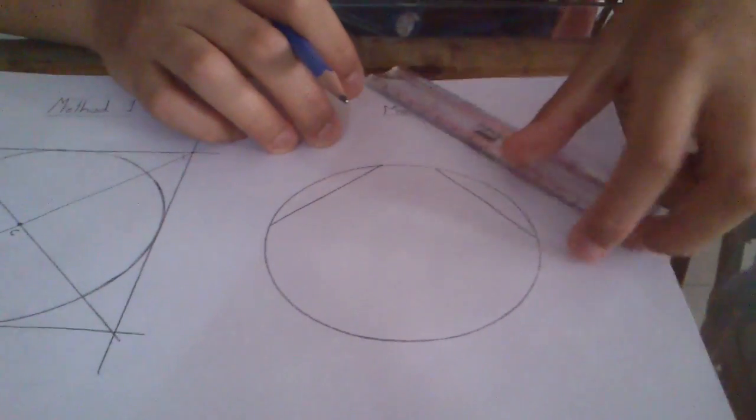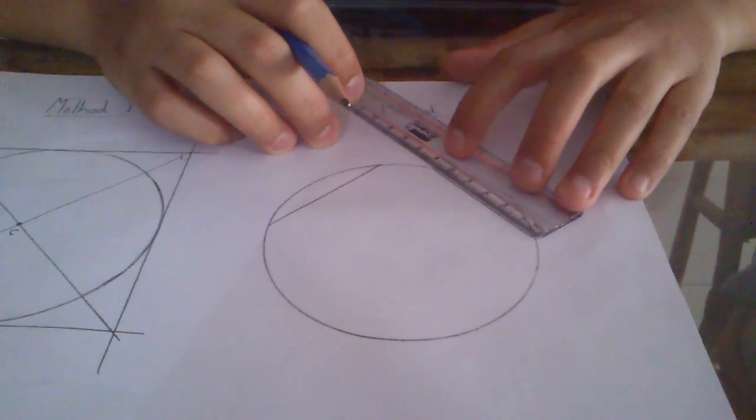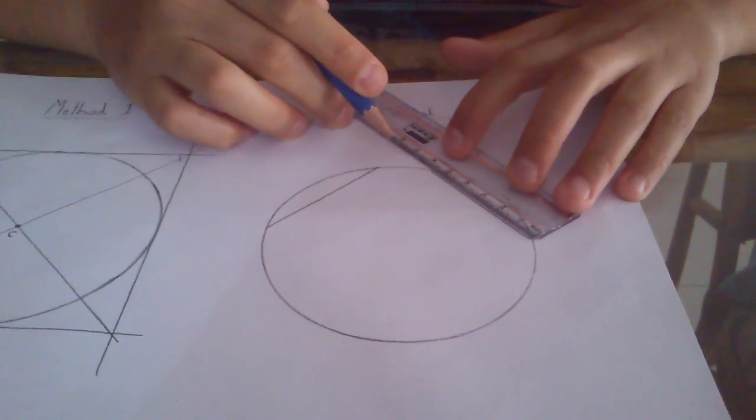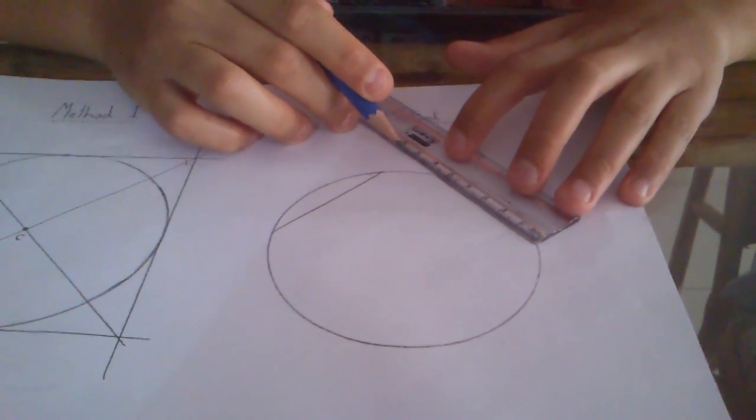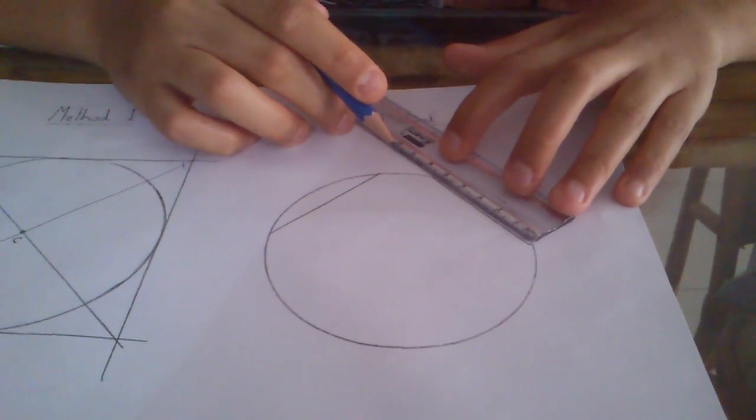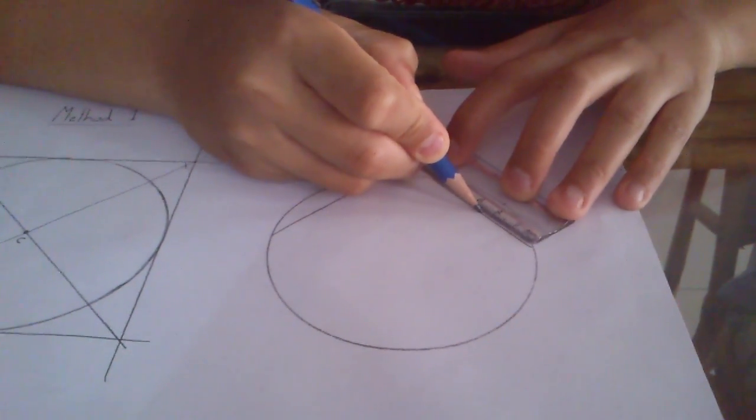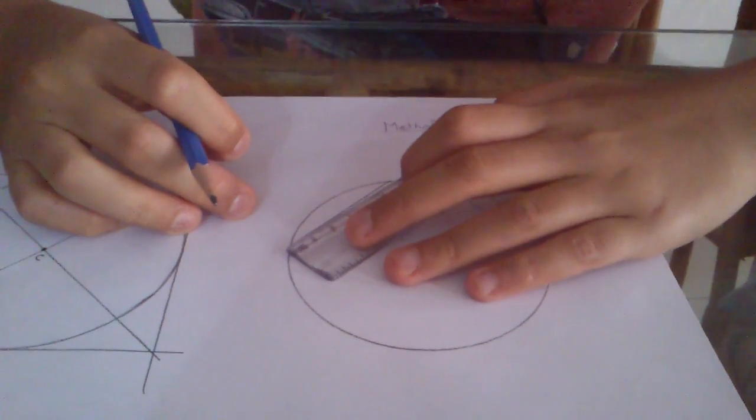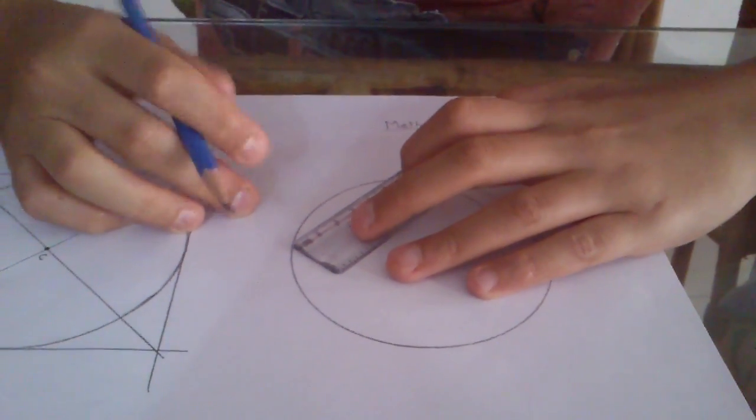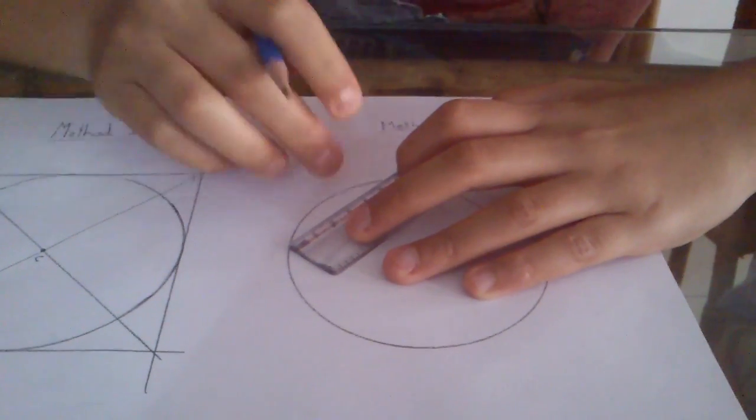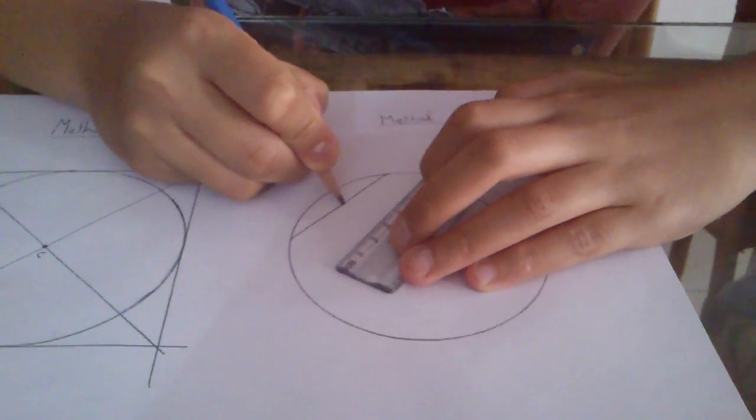And then all you have to do is find the center of this. Like this one is five centimeters here, right? So then you have to mark it as 2.5. So this is the center here. And then you have to mark this one as six. This one is six, right? So the middle of six is three.